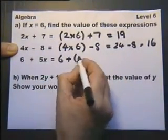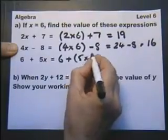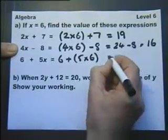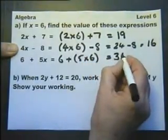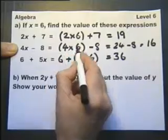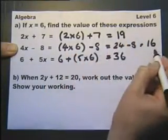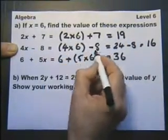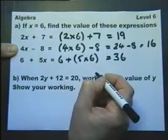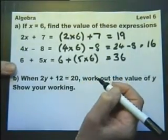6 plus 5 x's, that's 30, that's 36. Now you don't have to do this. You could do it just in your head if you wanted to. But I recommend this. Showing your working out helps you ensure you've got a good chance of getting it right.